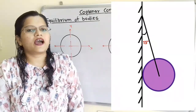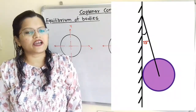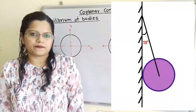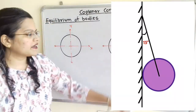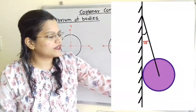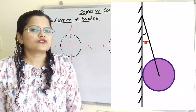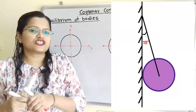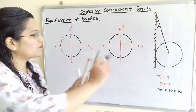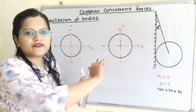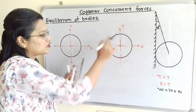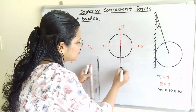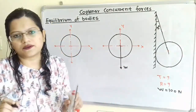Let us understand how to draw the free body diagram for a system when the system is in equilibrium. This sphere has weight W equal to 100 N, and this weight will always act in the vertically downward direction passing through the center. To draw the free body diagram, we will first draw the sphere — this is the center of the sphere — and passing through the center is weight W.